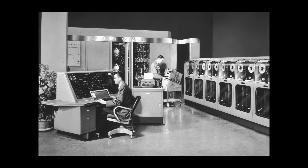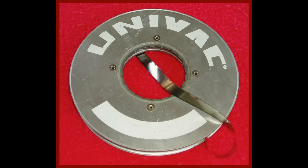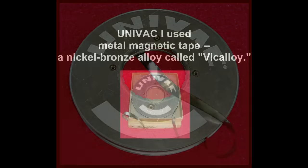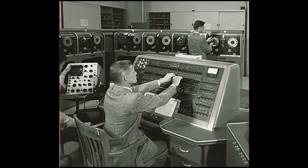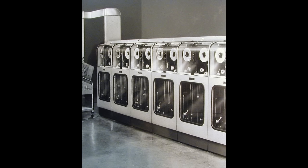Their innovation was to use 8-inch reels of metal tape. The tape itself was a nickel-plated phosphor bronze, known as Vic Alloy. The tape was ½ inch wide and 1,200 feet long per reel. The tapes were created and read by the UNIVAC's UNISERVO tape machine.